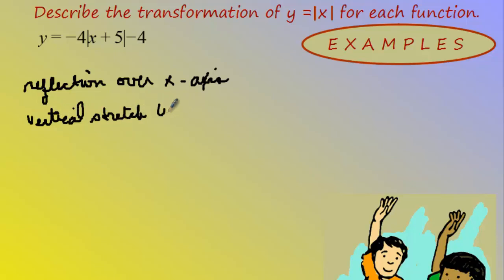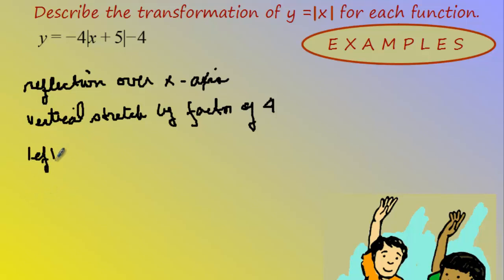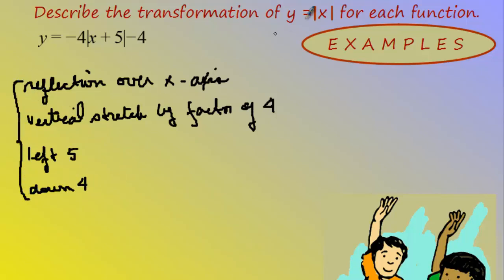Next, the number inside is a horizontal shift. Because it's positive inside, it shifts to the left by five. Then the sign outside gives a vertical shift — because it's negative, it's a shift down four. So all of these describe the different things that happen to the parent function y equals absolute value of x, and how you identify each transformation in the equation.